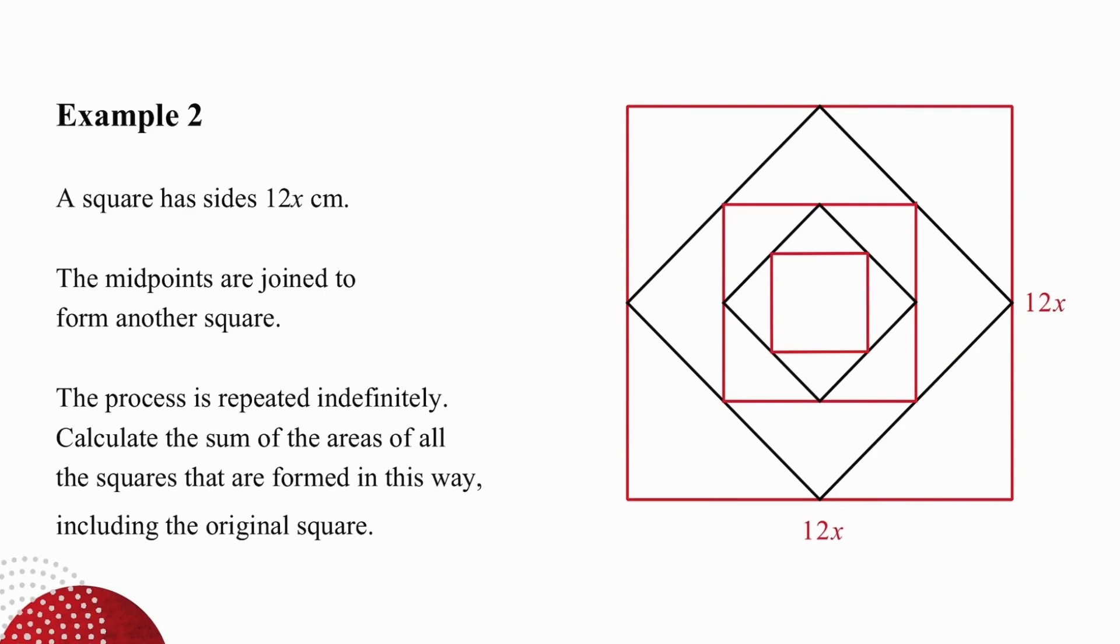In example two, we have a similar logic with midpoints, but a completely different situation. So what we have here is a large square and the midpoints of that large square are then joined to form another square. And this process continues. I want you to pause the video, see if you're able to work out the areas of the squares that are being generated and answer the question on your own. Then I will give you a hint, and then you will try again one more time on your own.